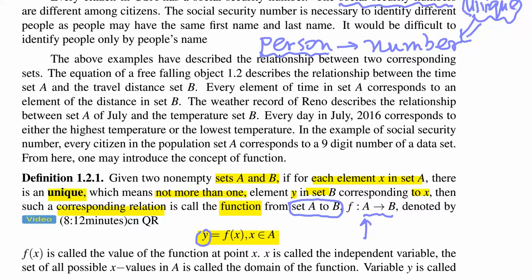Because since there is only one, once you put X here, through this function, you will find a value Y which is in set B. That will be, the correspondence will be called the function.